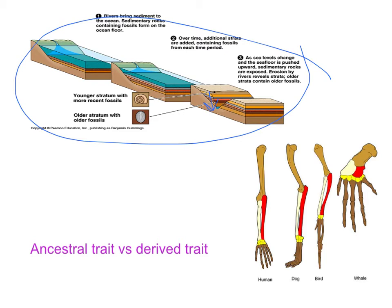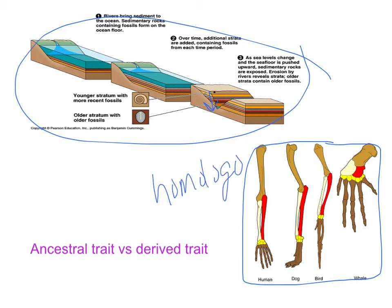We also use homologous structures — structures that have a similar structure but different functions, like the human hand, dog foot, bird wing, and whale flipper. All have very different functions but a very similar underlying structure. Homologous features show inheritance from a common ancestor, so we can use them to show evolutionary linkage. A homologous feature doesn't have to be obviously structural — it could also be heritable traits, anatomy, or DNA sequences.